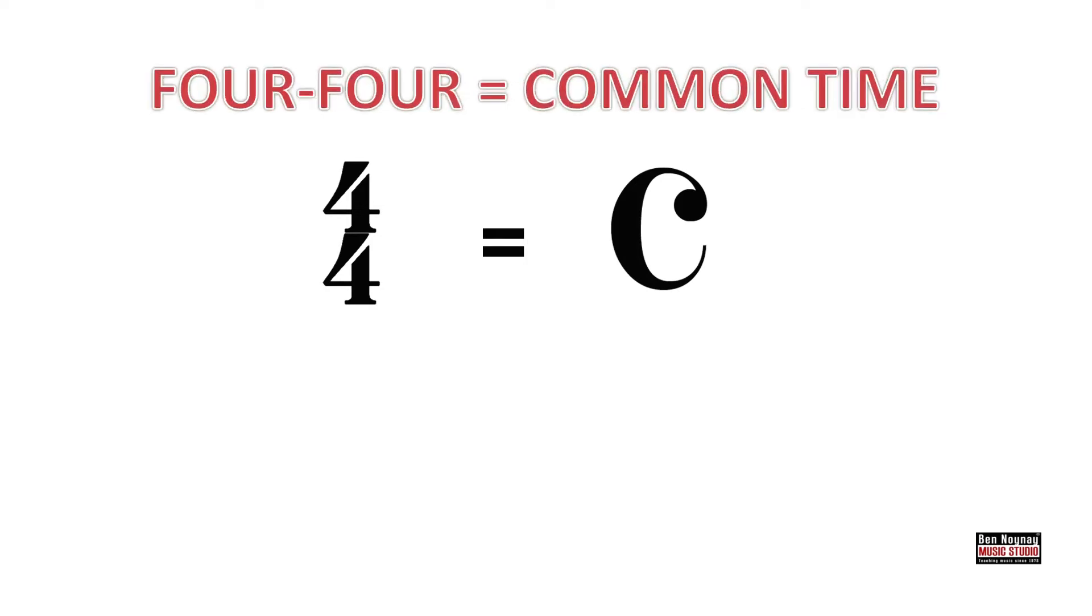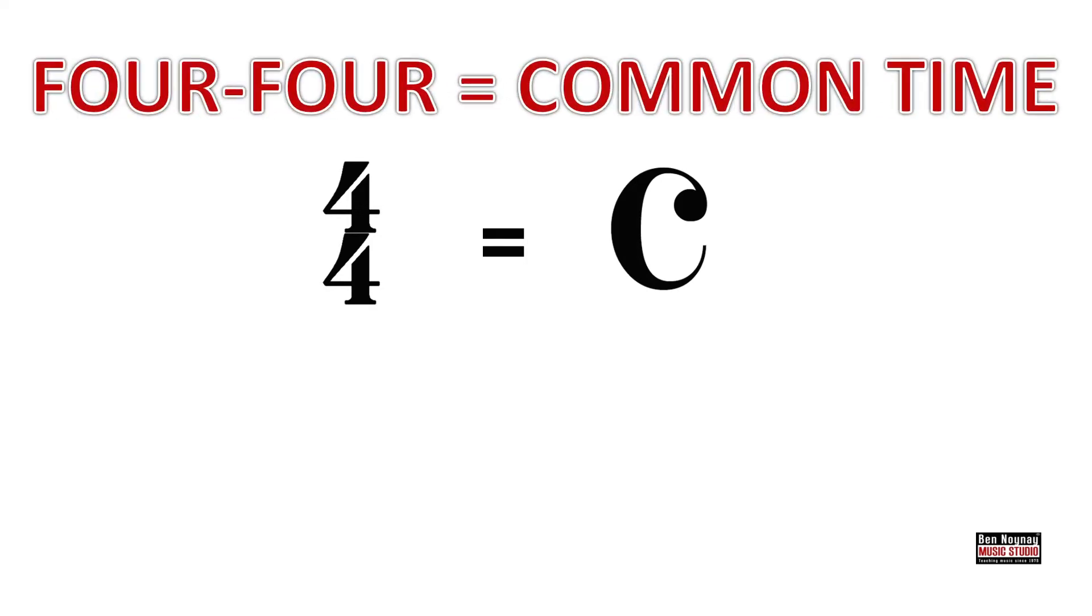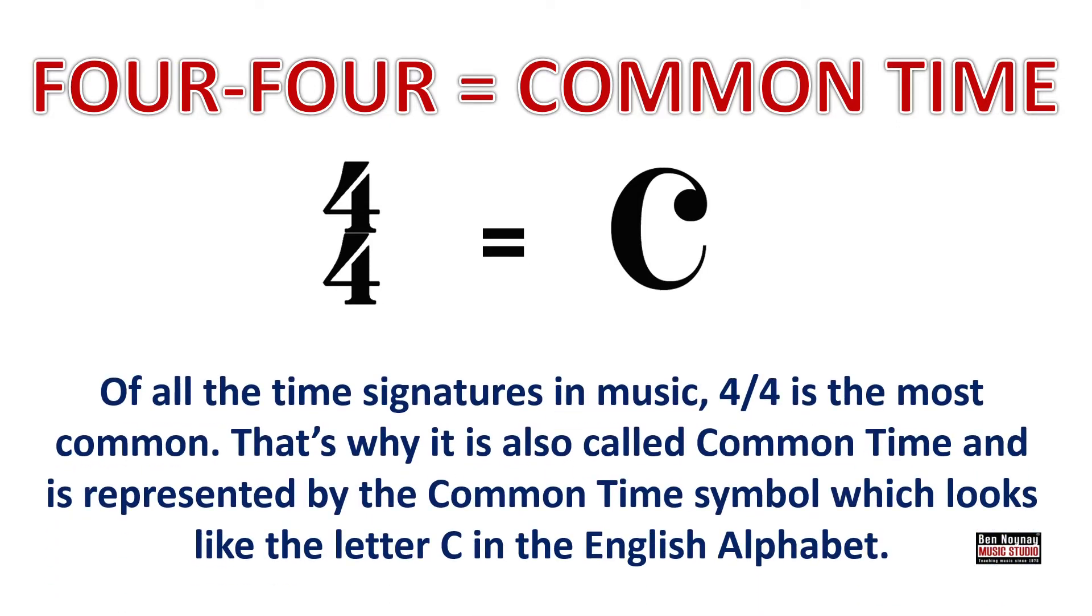As I've mentioned in the previous section, 4-4 is the most common time signature, and that's why it is sometimes called common time. This time signature is represented by the common time symbol, which looks like a letter C of the English language. Remember, common time is exactly the same as 4-4. So all the rules in 4-4 time are also applicable in a common time signature.